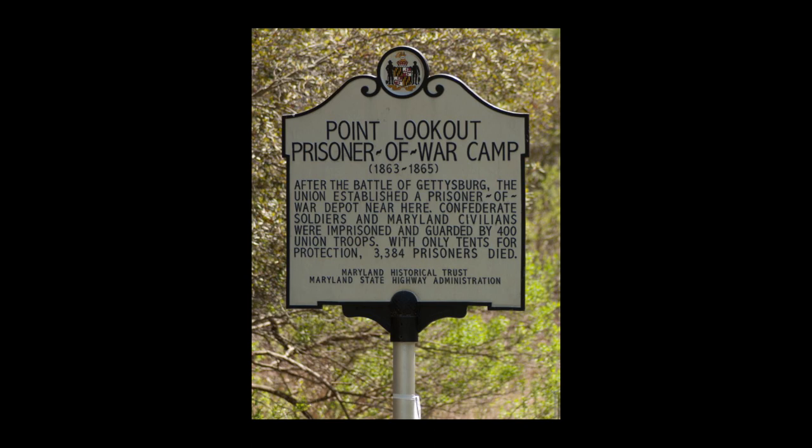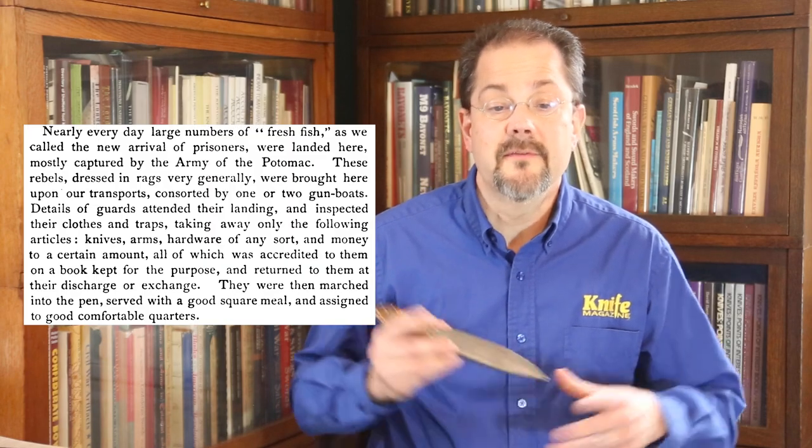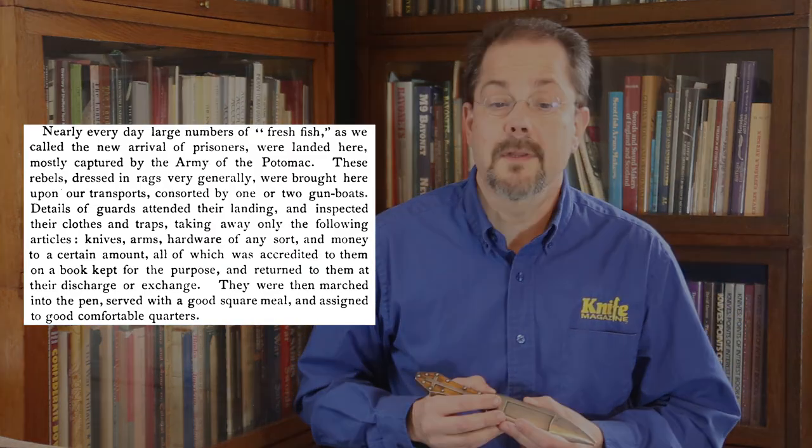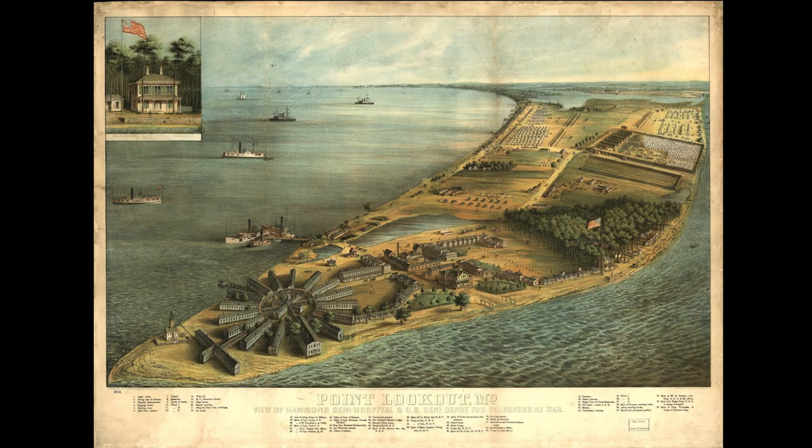The interesting part of the history of this knife, we believe, relates to time spent at Point Lookout, Maryland prison camp where Confederate prisoners of war were held. The unit arrived at Point Lookout in April of 1864 and left in July of 1864. A passage from that book: 'Nearly every day large numbers of fresh fish, as we called the new arrival of prisoners, were landed here, mostly captured by the Army of the Potomac.'